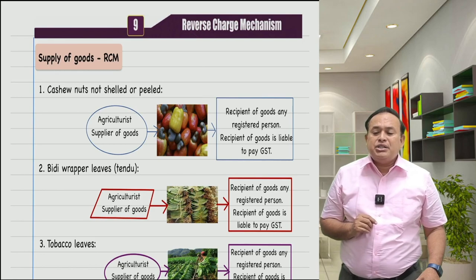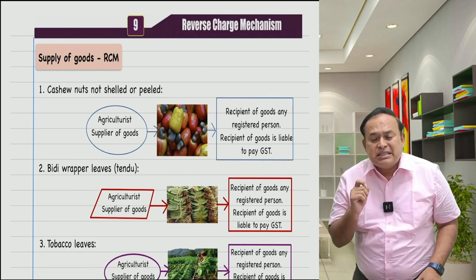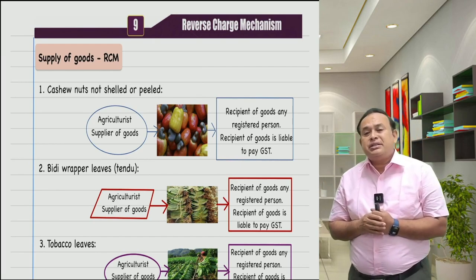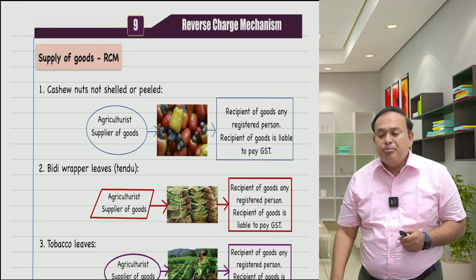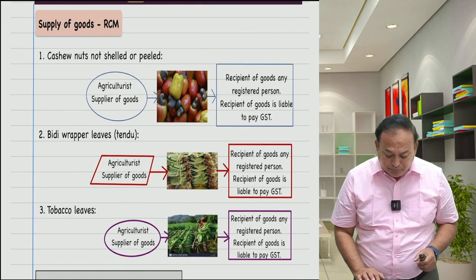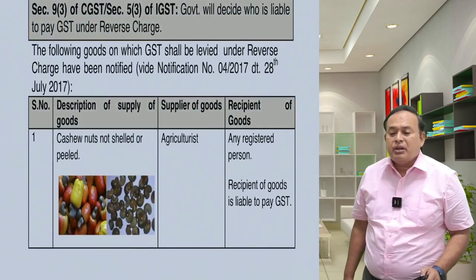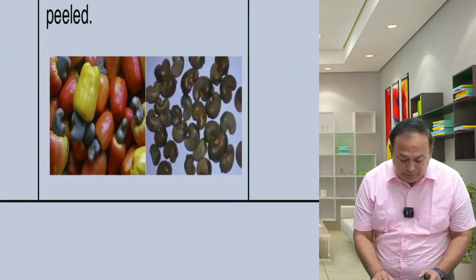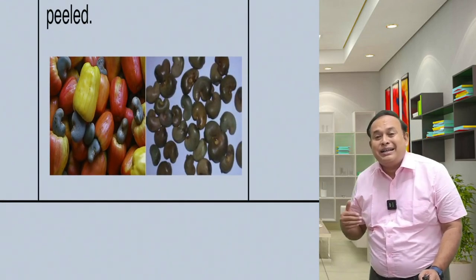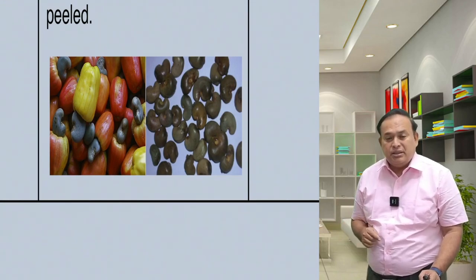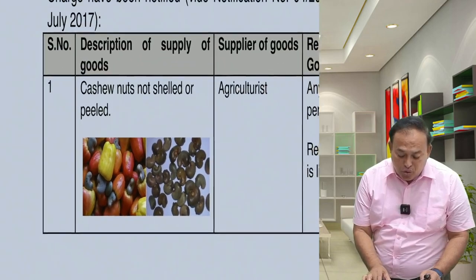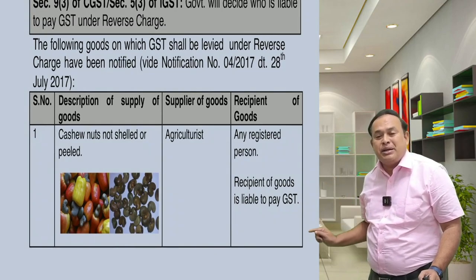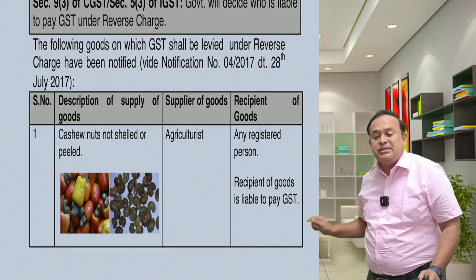First: cashew nuts, not shelled, not peeled, supplied by an agriculturalist. If this type of cashew nut — not shelled, not peeled — is supplied by an agriculturalist to a recipient who is a registered person, then the liability to pay GST falls on the recipient. The recipient only is liable to pay GST in this case.